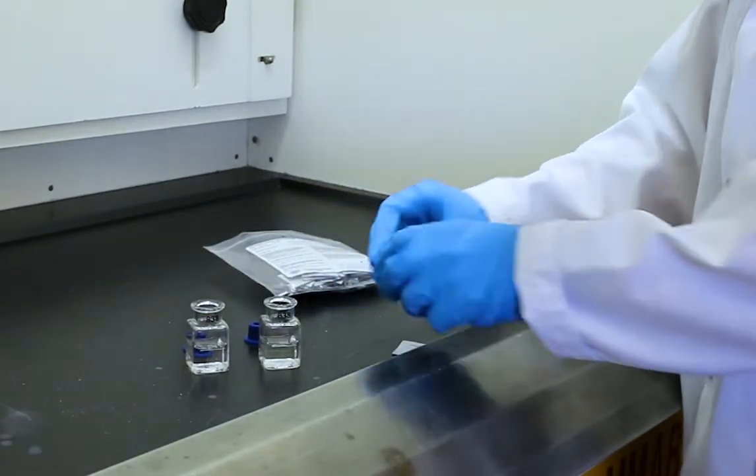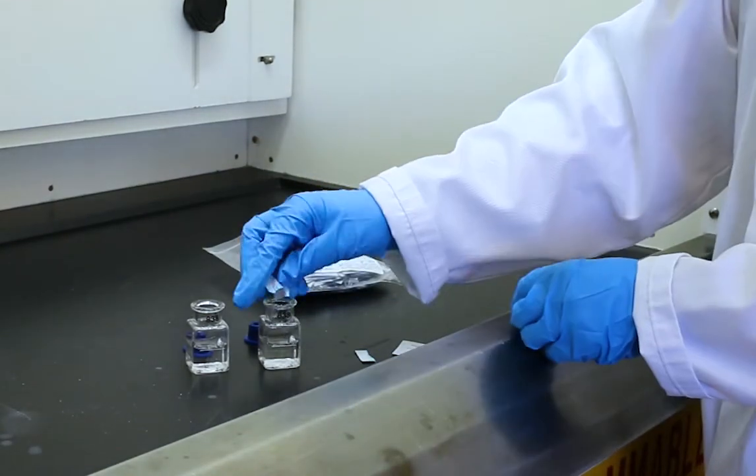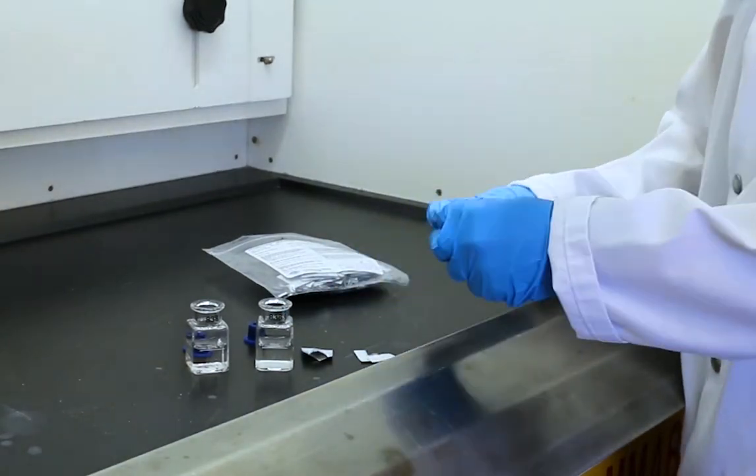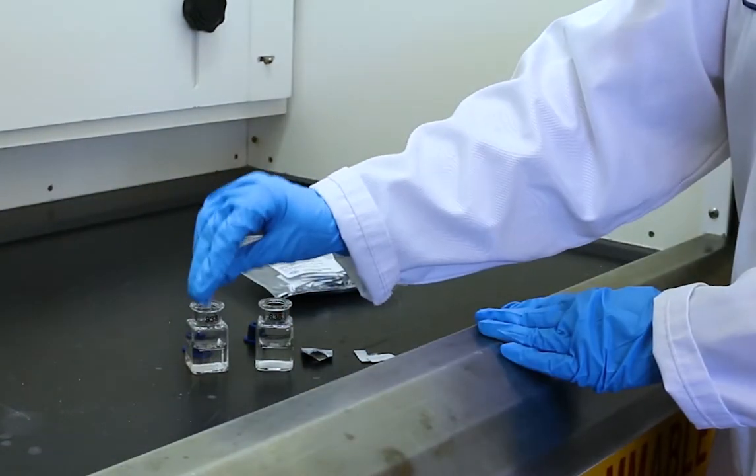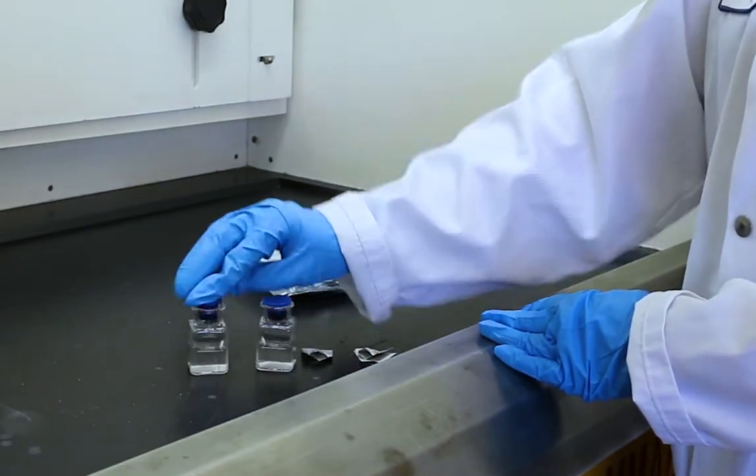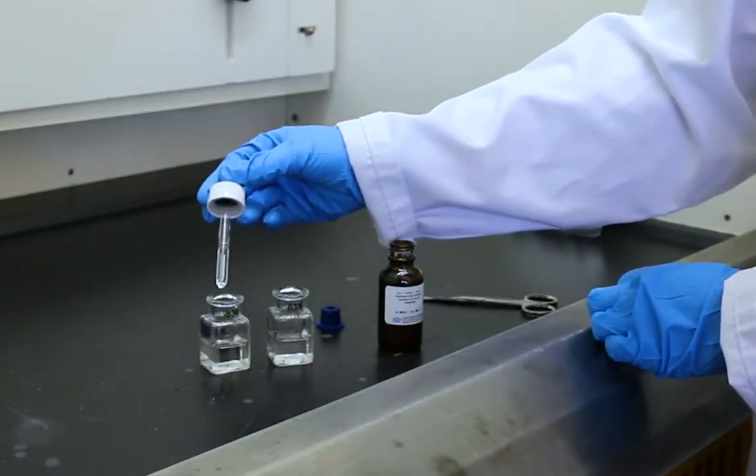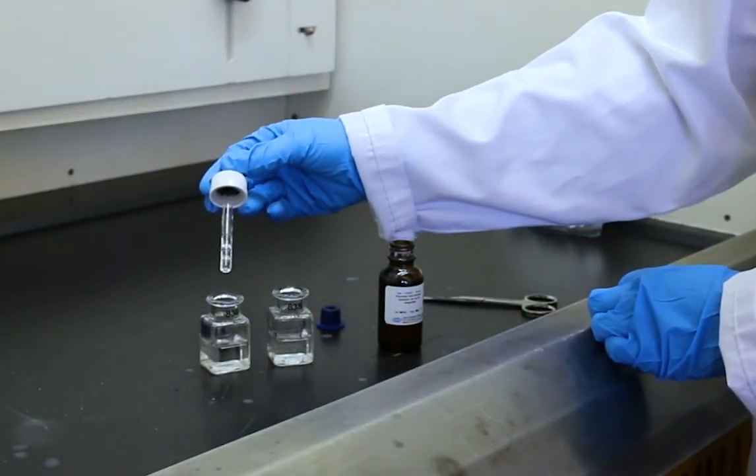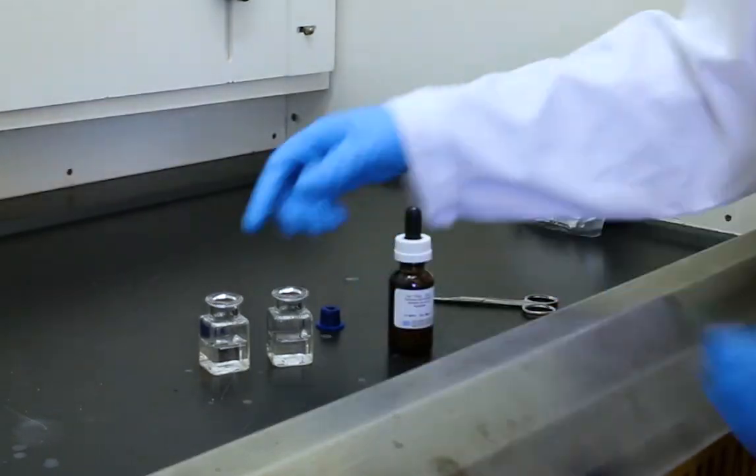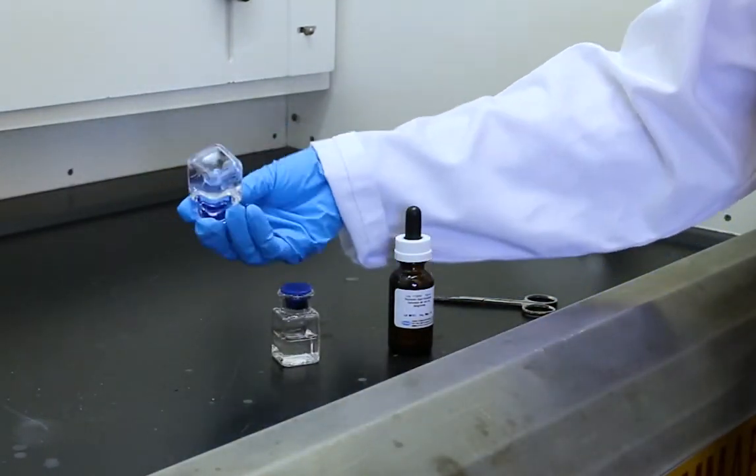Add the contents of one ascorbic acid reagent powder pillow into each cell and invert them to dissolve. If your water sample has hardness at interfering levels, add four drops of Rochelle salt solution to the sample cell after the ascorbic acid has been added.